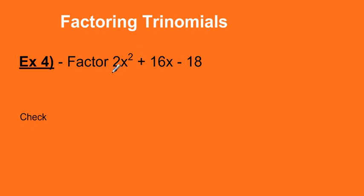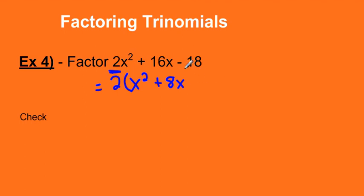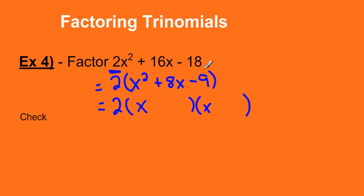This last example looks a little different — there's a constant value in front of the x squared. Let's factor that out to make things easier. We take a 2 out of each term: 2x squared divided by 2 is x squared; 16x divided by 2 is 8x; negative 18 divided by 2 is negative 9. So we have 2 times the quantity x squared plus 8x minus 9. Now it looks like something we're more familiar with, starting with x squared. We're going to need two numbers that multiply to give us negative 9 and add to give us 8.